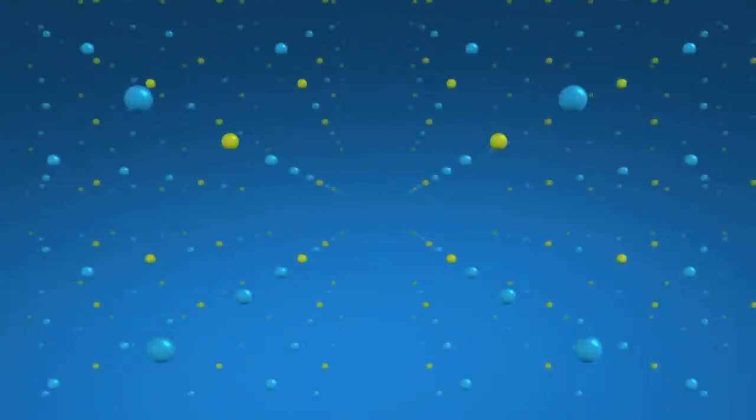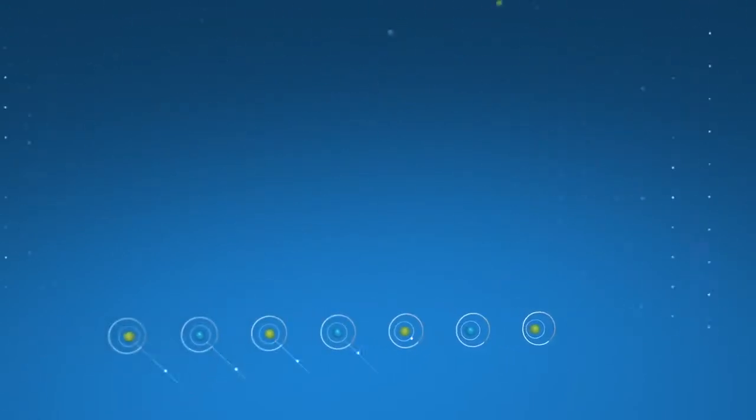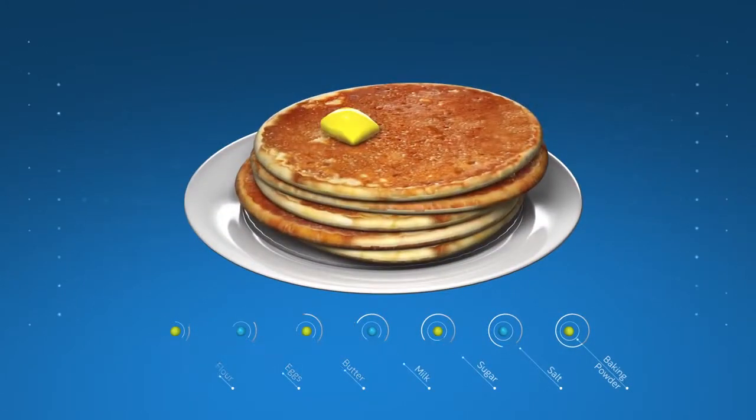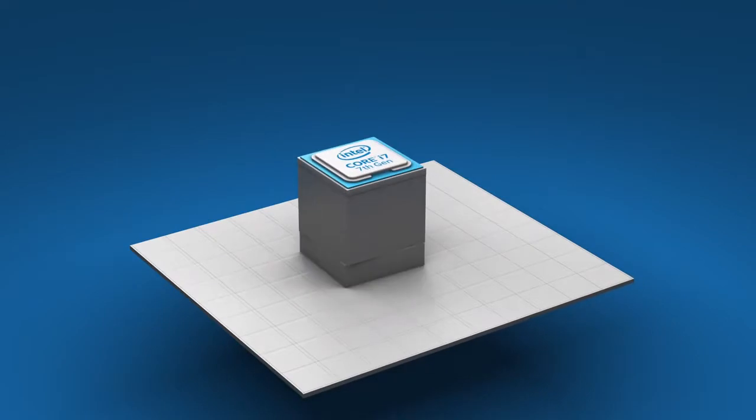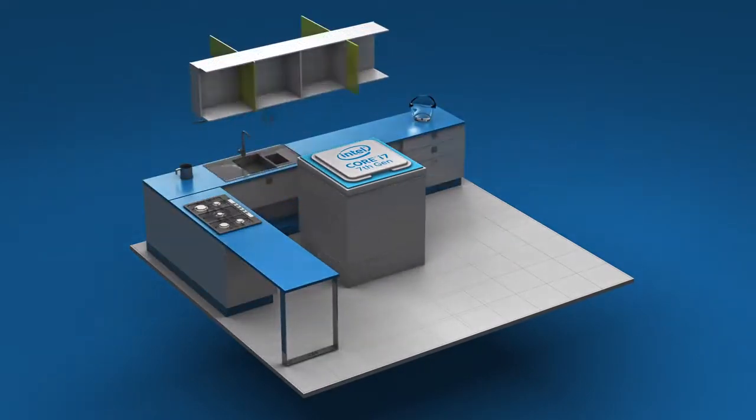Start by thinking of the data your computer uses as the ingredients you need to make pancakes. Imagine the computer's processor as the cook, and the DRAM as the kitchen countertops.